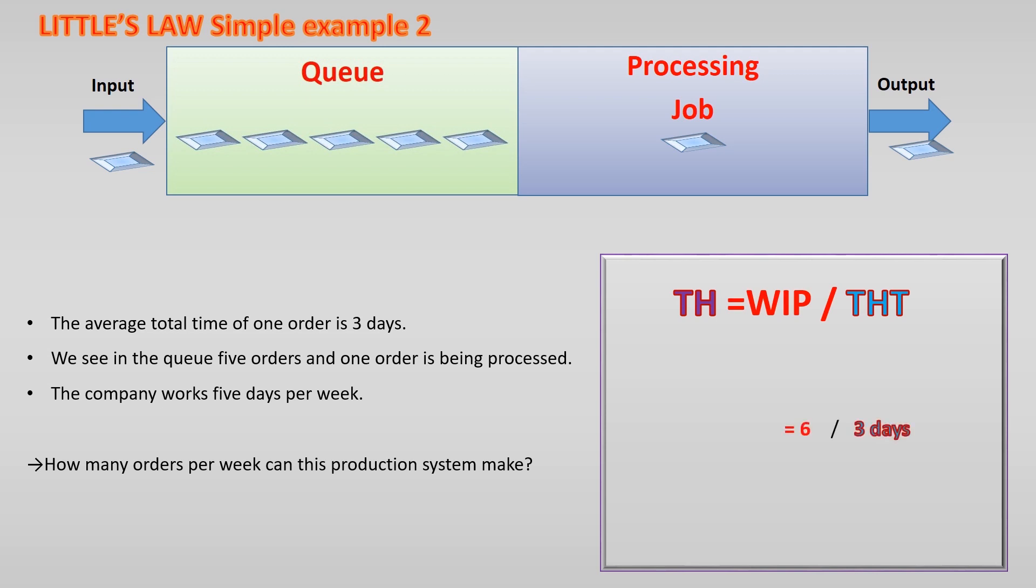This is the work in progress. So, the 5 orders waiting and the one being processed, this makes 6 and divide this by the total time of 3 days. We see we can make 2 orders every day and this makes 10 orders per week of 5 working days.